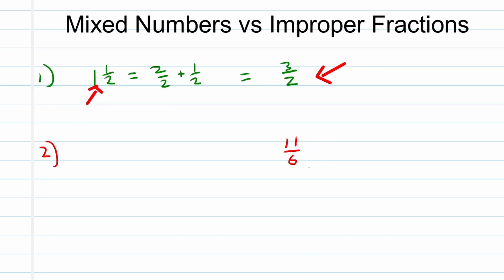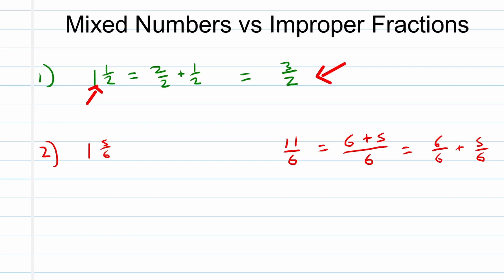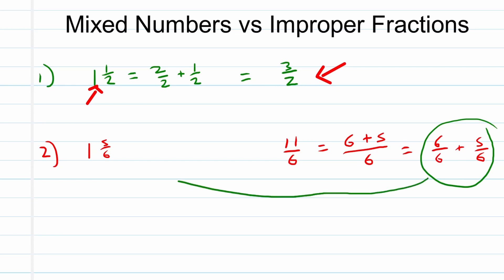For example, this should be 6 plus 5 over 6, which can be written as 6 over 6 plus 5 over 6. We know that 6 over 6 is equal to 1. Therefore, this can be written as 1 and 5 over 6. That's how we write the improper fraction 11 over 6 as the mixed number 1 and 5 over 6.